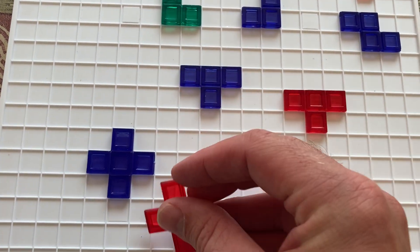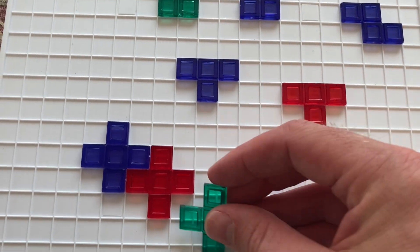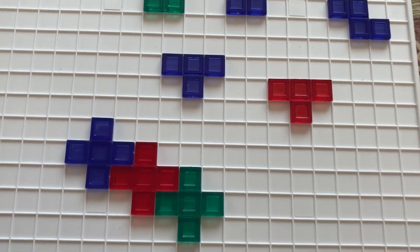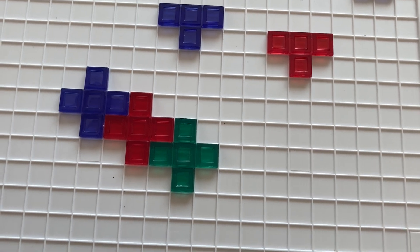And the last one is tessellation. So if we have the same shape repeating and not leaving any gaps, then we'd call that a tessellation.